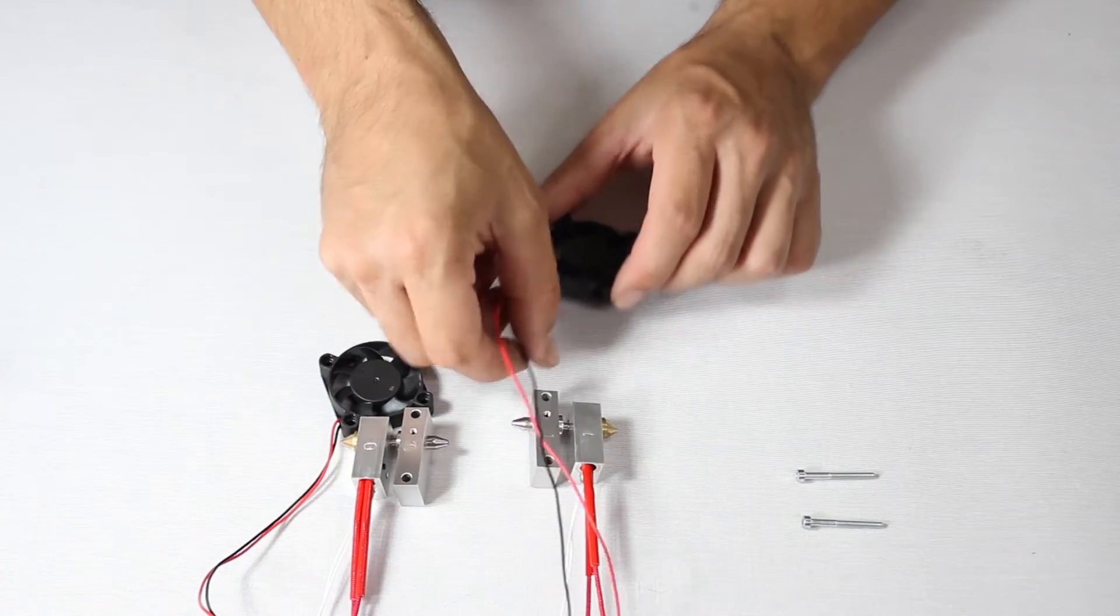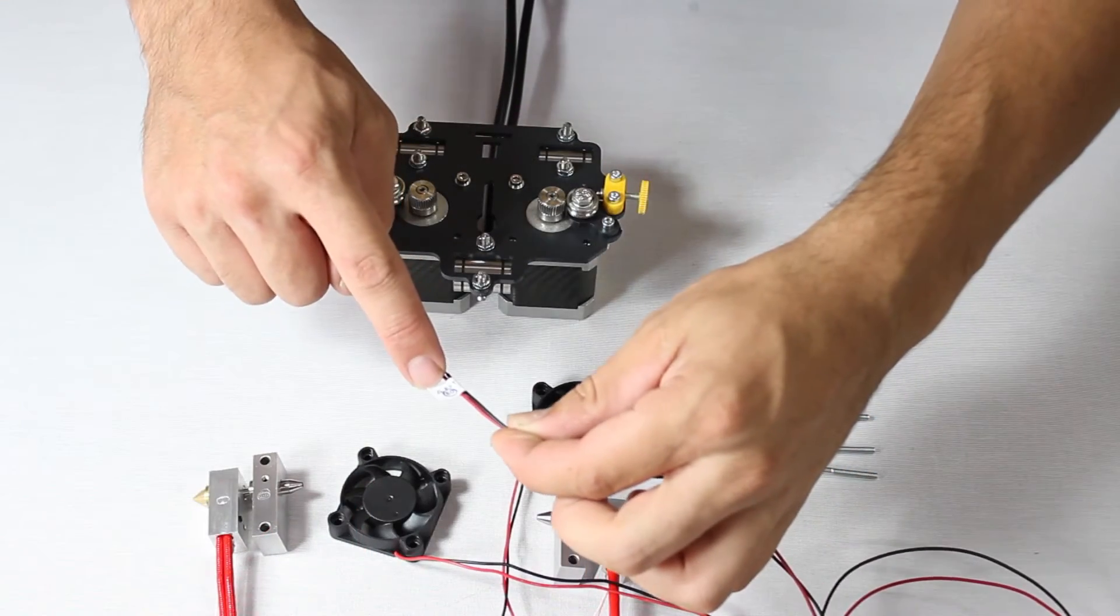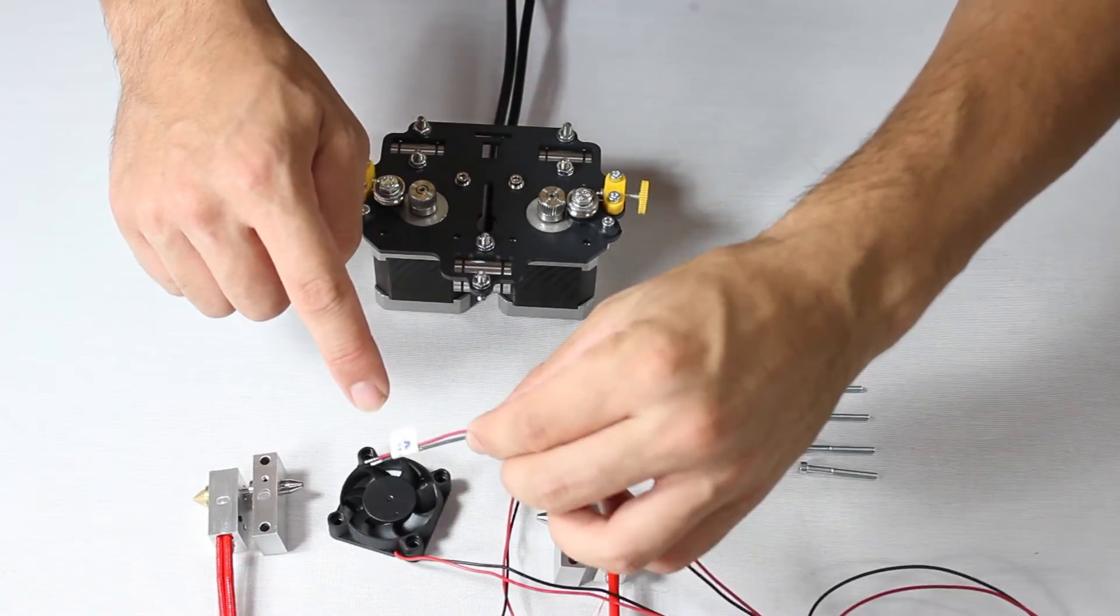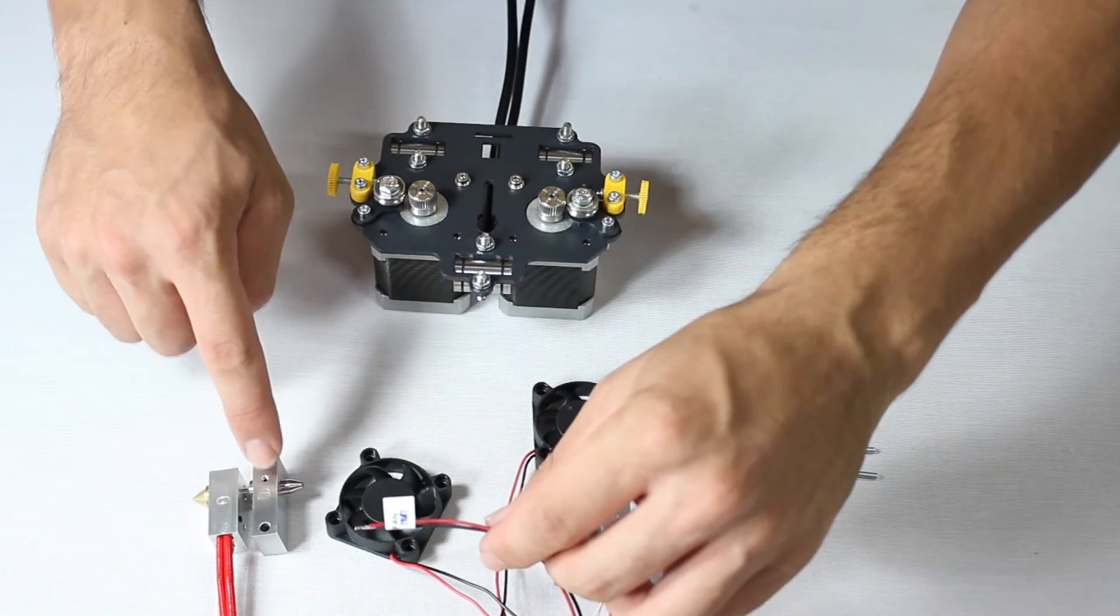Take your time with the wiring, as it can easily get tangled and you mustn't mix them up. So match up the fan labeled 0 to the extruder hotend and heatsink labeled 0, and needless to say, do the same for the things with 1 on them.